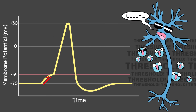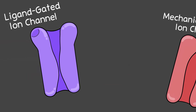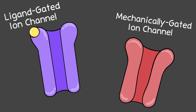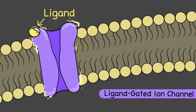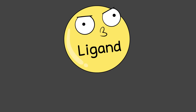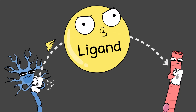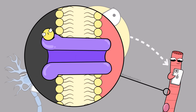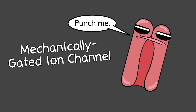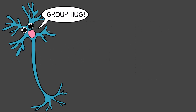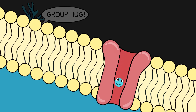An action potential won't start until enough ions enter the cell to depolarize it to threshold, so some initial depolarization must occur first. Ligand-gated ion channels or mechanically-gated ion channels can respond to a stimulus and open to start this initial depolarization. Ligand-gated ion channels let ions through only when a ligand — a signal molecule — binds to the channel protein. For example, a neurotransmitter released from a neuron binds to ligand-gated ion channels on a muscle cell's membrane, causing channels to open and ions to rush in. Mechanically-gated ion channels respond to physical stimuli, such as touching the skin, which can signal sensory neuron channels to open.